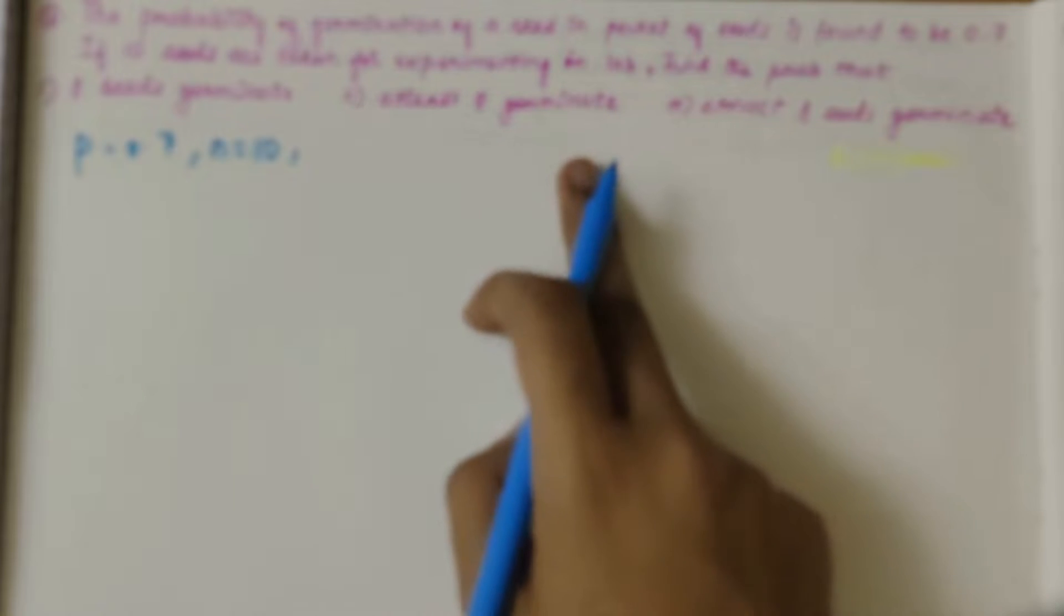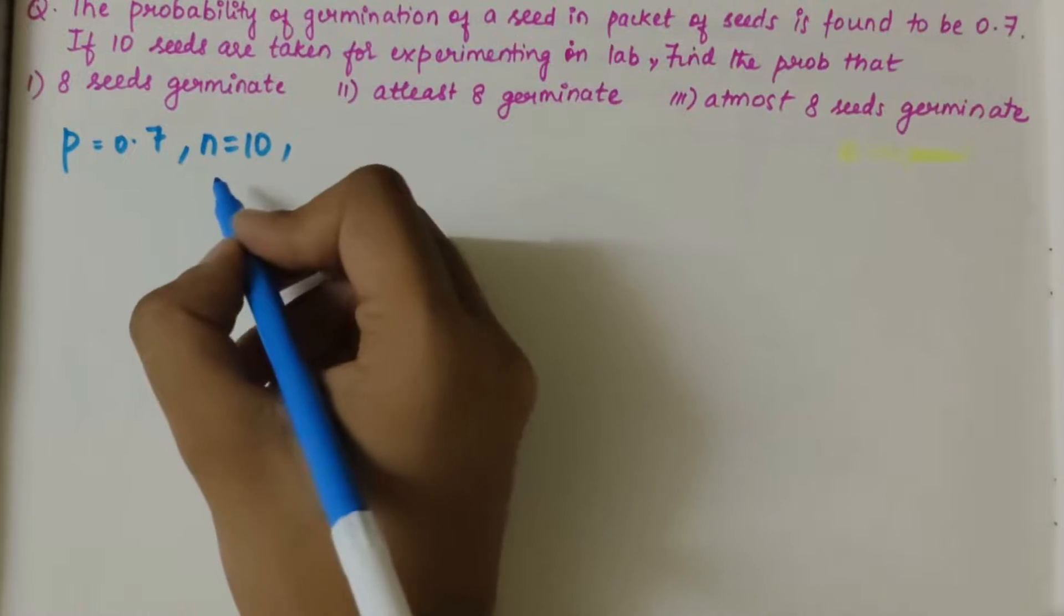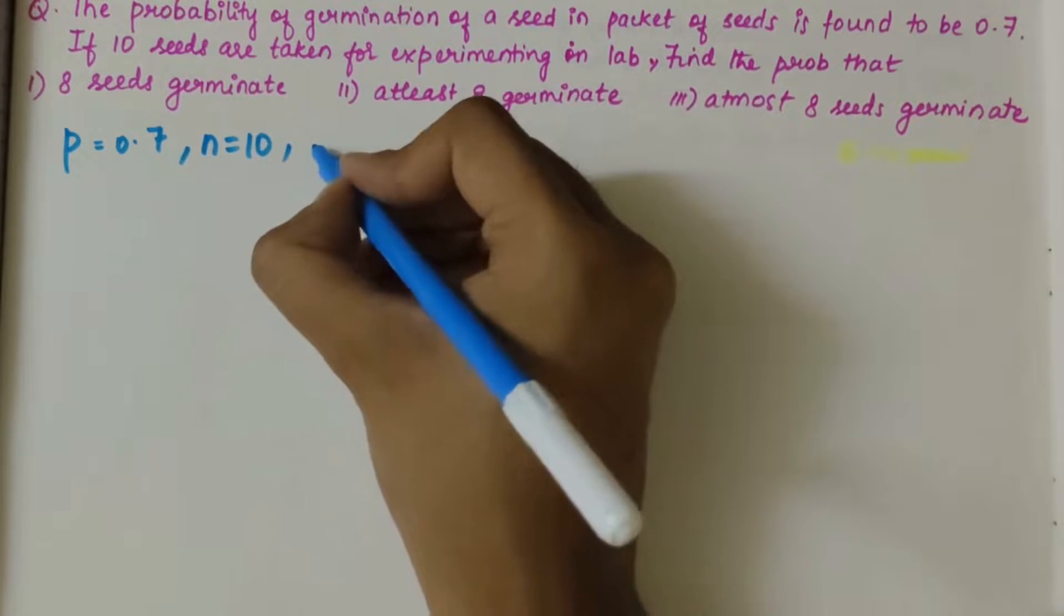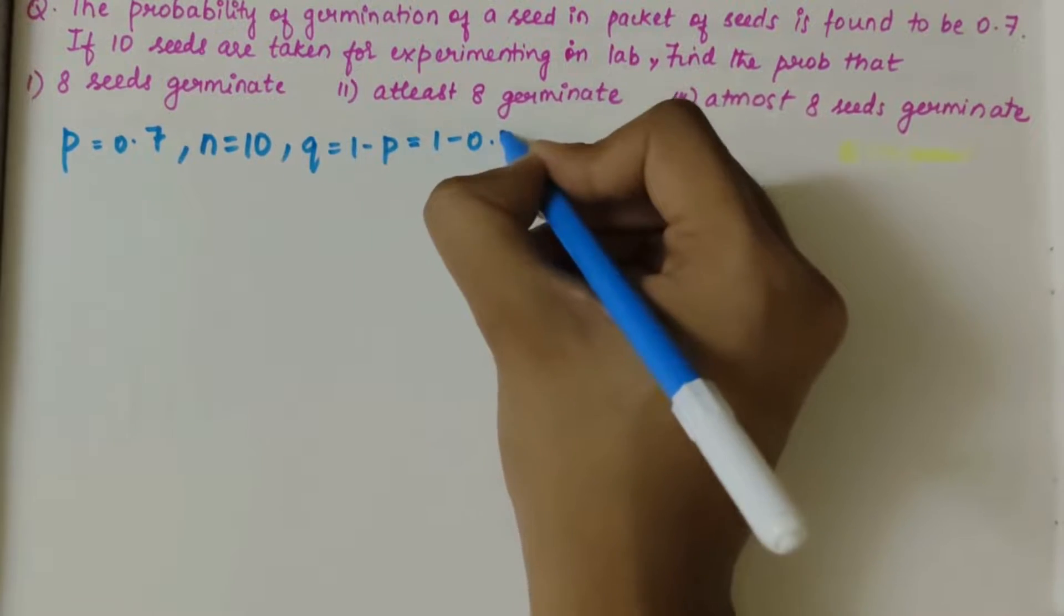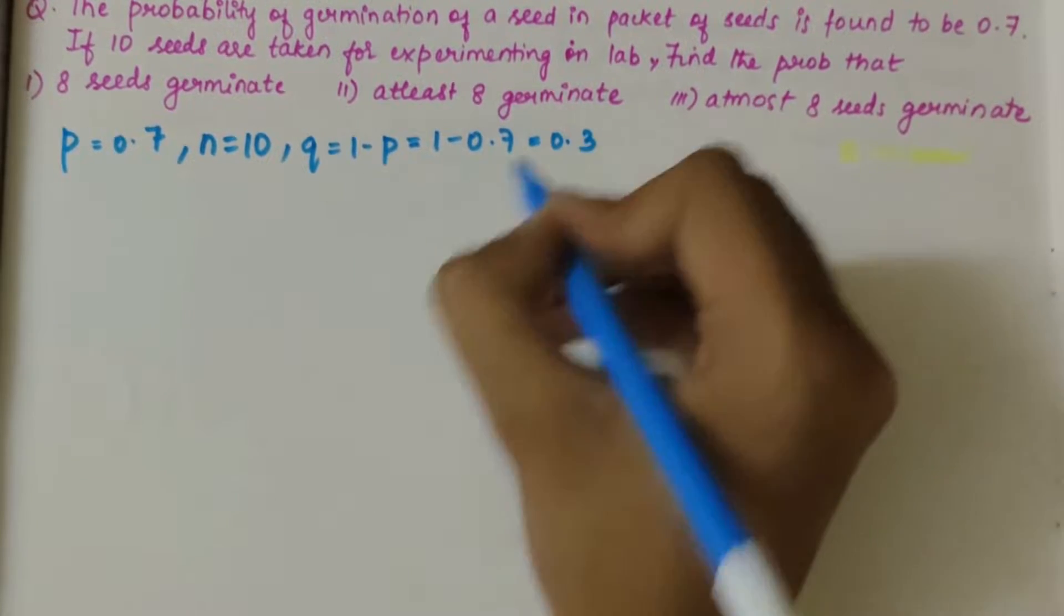Find the probability that: 8 seeds germinate, at least 8 germinate, at most 8. These are the problem sub-parts. Let's first derive a general equation. P value we have is 0.7, n value is 10, so q would be 1 minus p, that is 1 minus 0.7, which is 0.3.